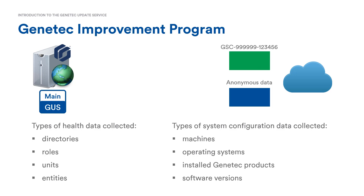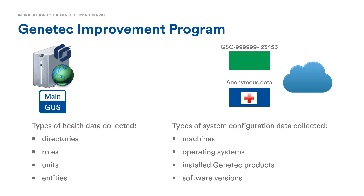The second option during the installation is Yes, I want to participate, but anonymously. With this option, the data is sent to a cloud service, but all identifying information is removed before it is sent. Genentech can still use this information to make improvements to our software, but no one can access your data through the GTAP, and your system ID, machine names, and entity names are never leaving your local network.